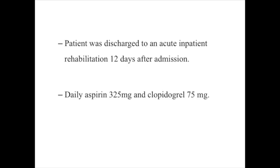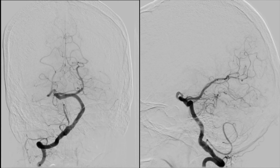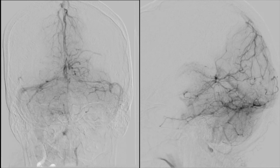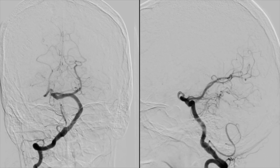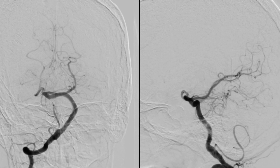The patient was discharged to acute rehab 12 days after admission and started on dual antiplatelets. Fortunately, at one year, the patient's clinical exam remains relatively favorable. He is alert and oriented with normal mental status. He does have some persisting dysarthria and increased reflexes and increased tone, but he is able to ambulate, and he has a modified Rankin scale of two. One-year control angiographic runs demonstrated a dramatic improvement in the reduction of the fusiform dilatation of the mid-basilar artery.